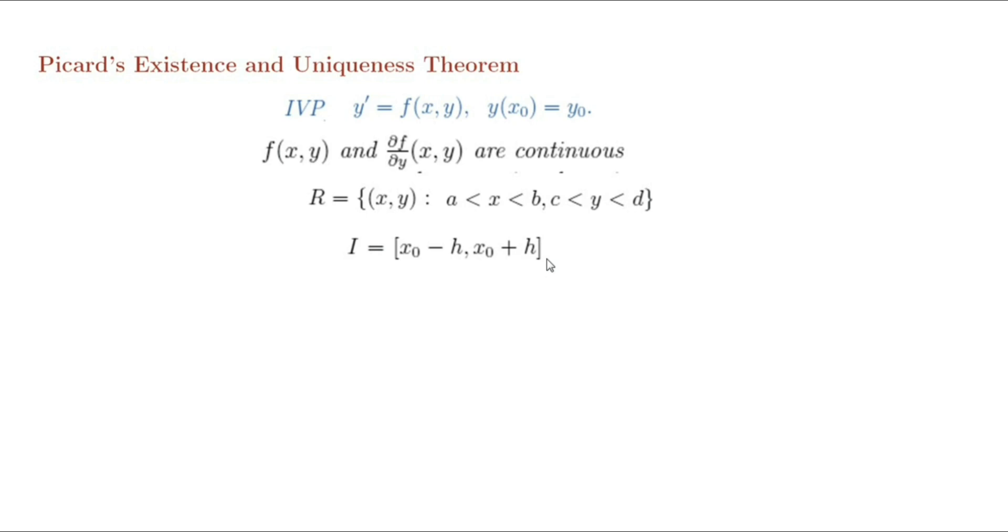Moreover, the Picard's iteration defined by y_{n+1}(x) equals y₀ plus integral from x₀ to x of f(t, y_n(t)) dt produces a sequence of functions y_n(x) that converges to this particular solution uniformly on interval I.